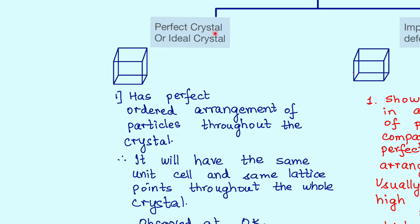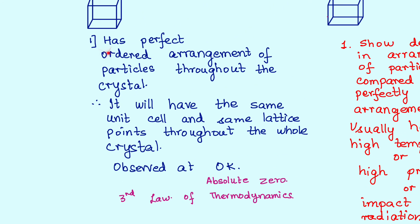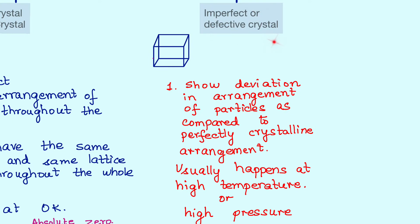Same way, ideal crystals or perfect crystals can only be observed at 0 Kelvin, what in thermodynamics we had defined as absolute zero. If you remember the third law of thermodynamics, which states that a perfectly crystalline arrangement is possible only at absolute zero or 0 Kelvin. So that means any deviation, any form of deviation from this ordered arrangement of particles would give us what we call as an imperfect or defective crystal.